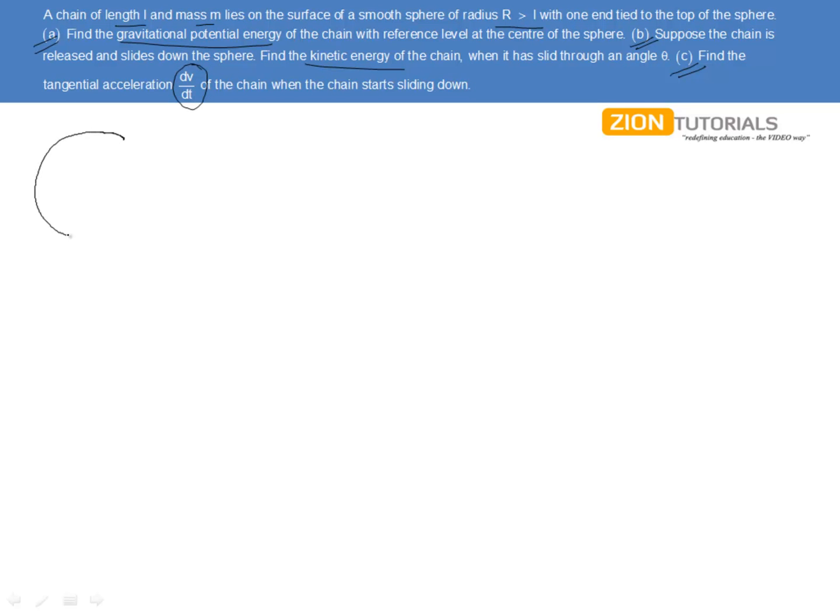Now here, we are actually having a sphere and a chain whose one end is fixed and the chain is lying over here of length L while this sphere is of the radius capital R. Now let us take a random element at an angle theta. If the length of this is dL then let this angle be d theta which is this element is actually subtending at the center.